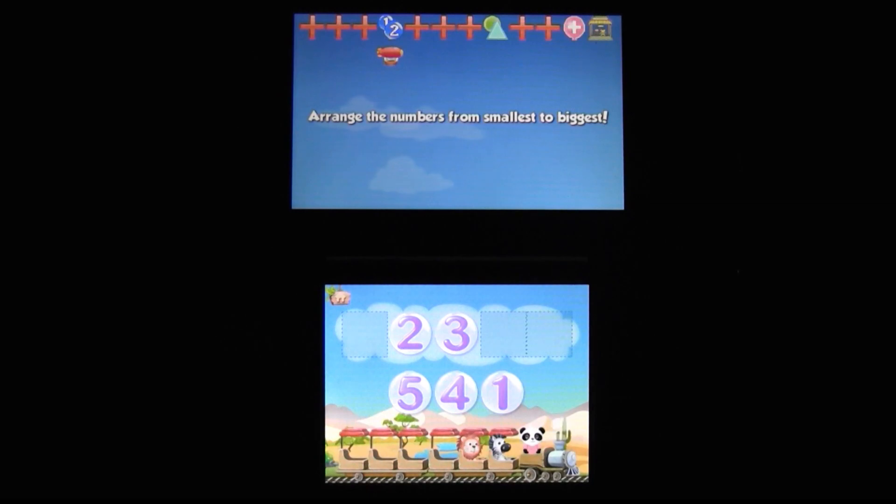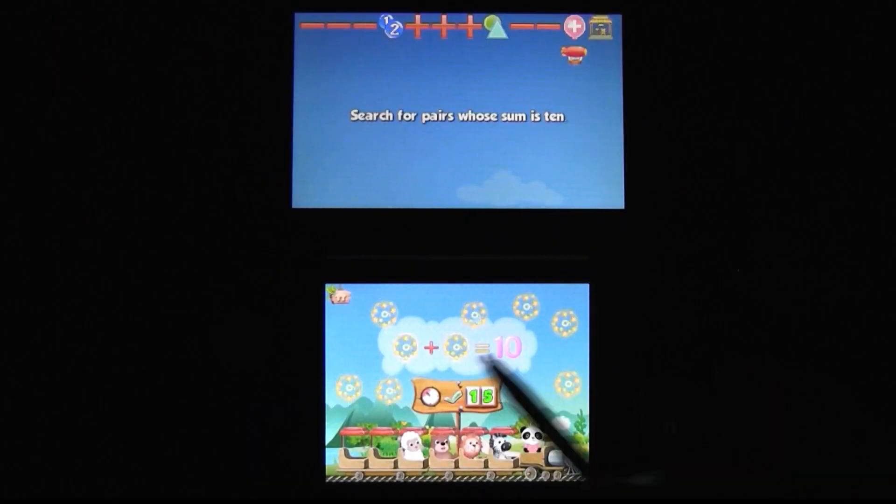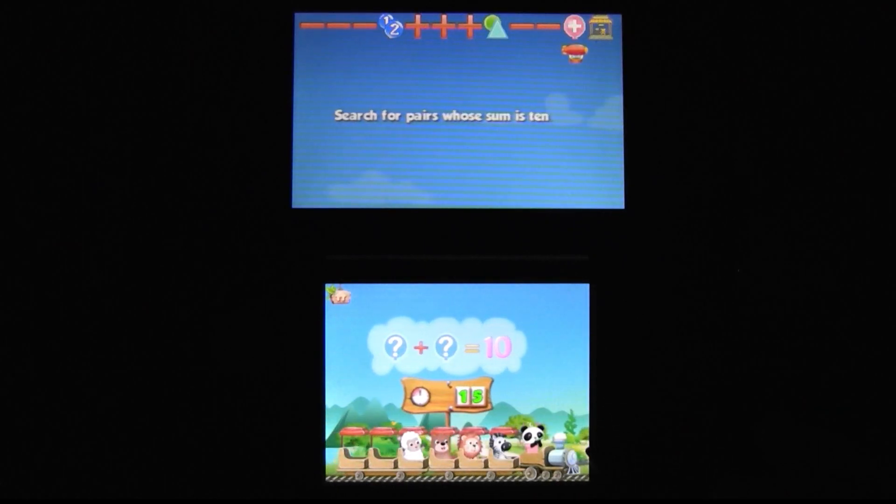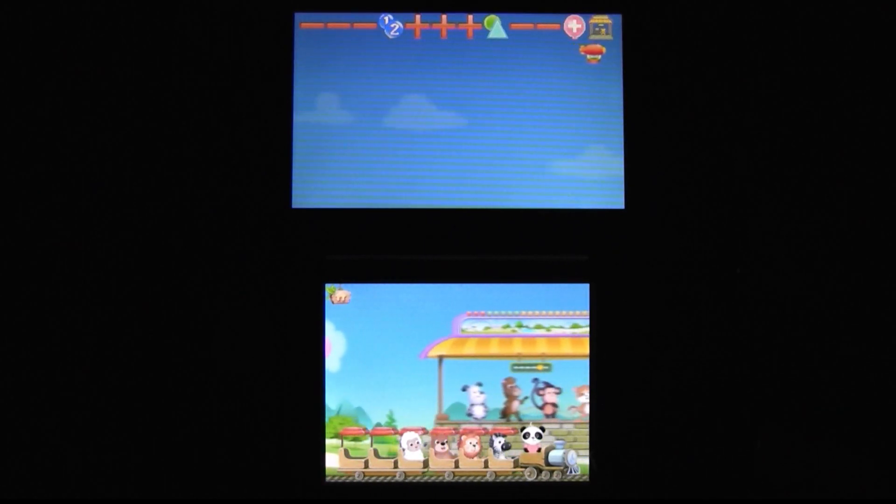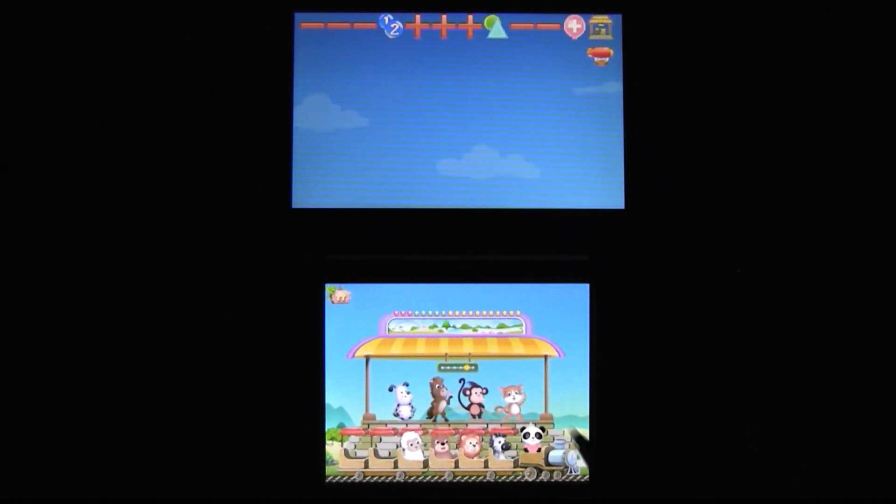So the game is basically a series of math problems. There's addition, subtraction, as well as some very basic puzzles and shapes. You answer correctly, and the train keeps a-rolling. At the end of each level, you get to pick an animal to hop on the train, which means the other animals get left behind.